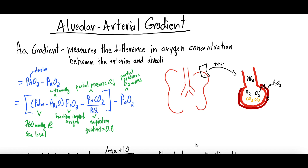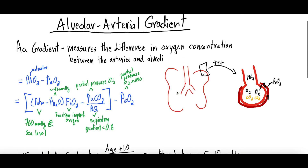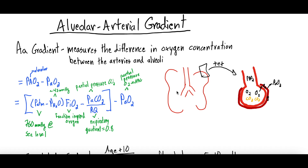Today we're going to be talking about the interesting topic of the alveolar-arterial gradient. This video more so targets people in healthcare or medicine, but anyone interested is welcome to follow along. We'll cover what the AA gradient is, the math behind it, why that math makes sense, normal and abnormal ranges, and how to use it — a quick-and-dirty guide for further differentiating causes of hypoxia, or low oxygen levels, in a patient of unclear etiology.